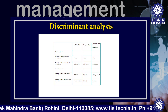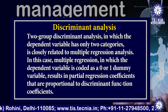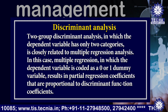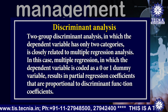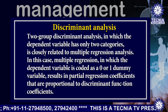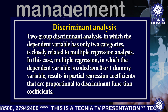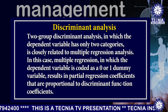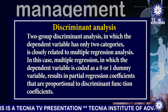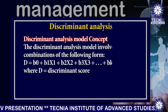Two-group discriminant analysis, in which the dependent variable has only two categories, is closely related to multiple regression analysis. In this case, multiple regression in which the dependent variable is coded as 0 or 1 as a dummy variable results in partial regression coefficients that are proportional to discriminant function coefficients.